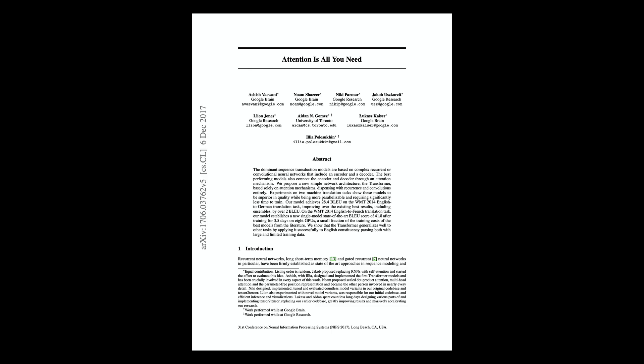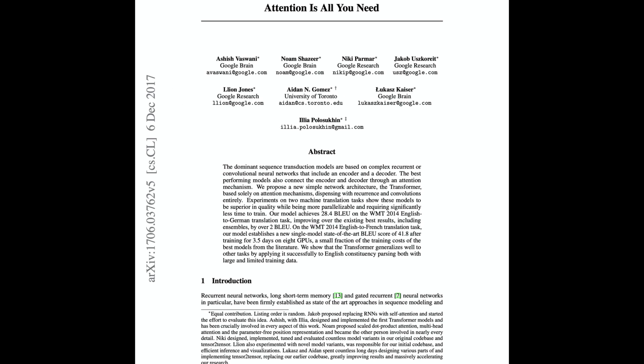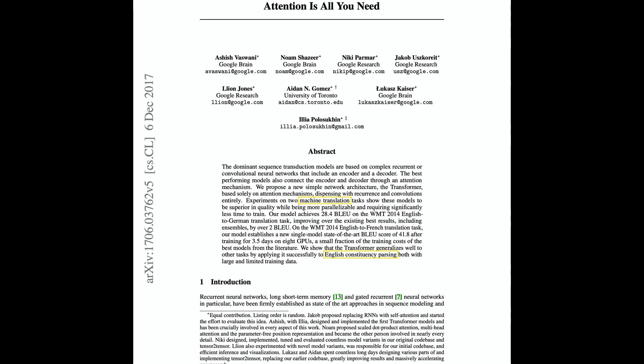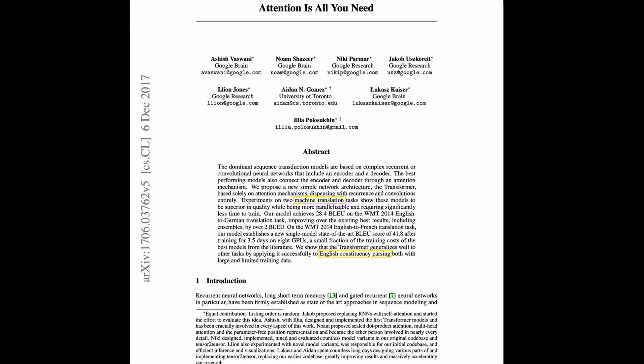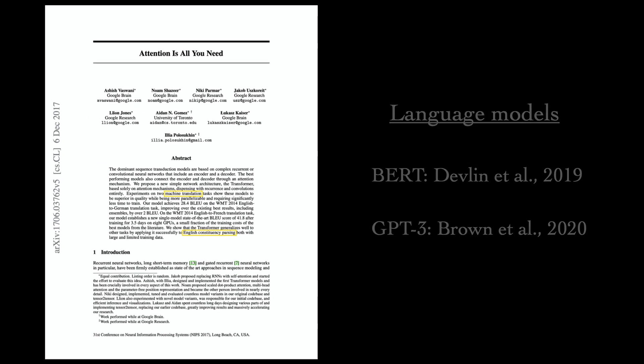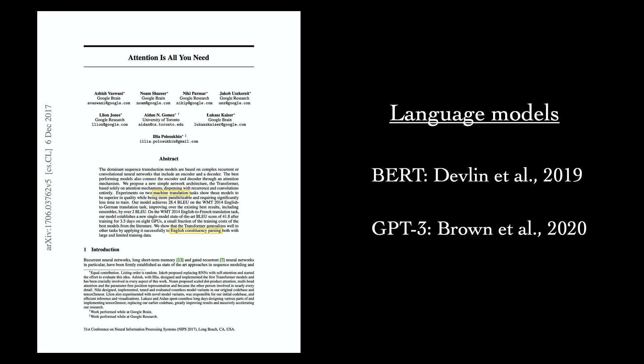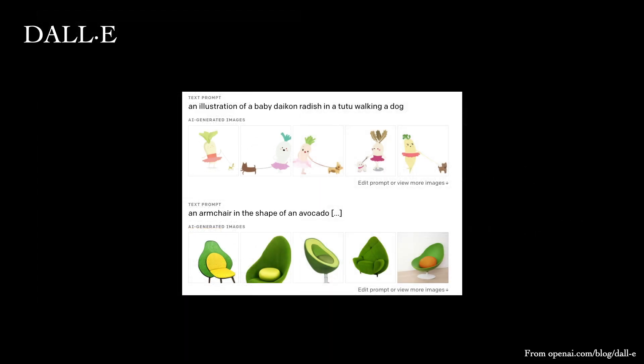The original paper focused on natural language tasks, and this is where transformers have been most commonly used. Prominent examples include BERT and GPT-3, but they can be applied to other types of data as well, such as images. DALL-E, a transformer-based model developed recently by OpenAI, synthesizes images based on text descriptions.